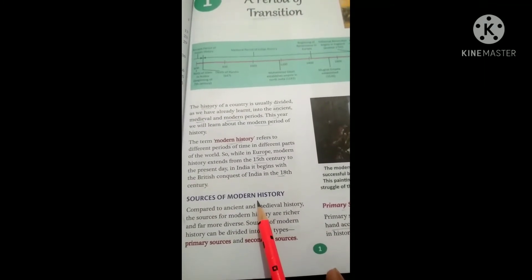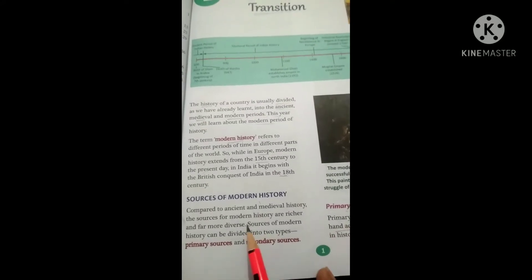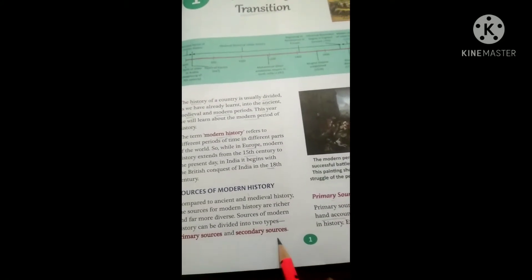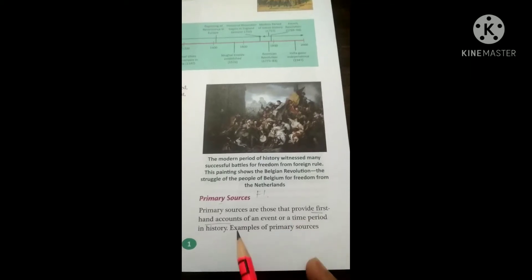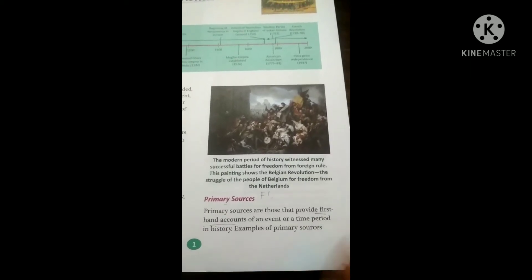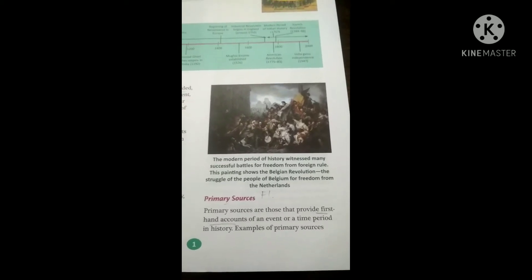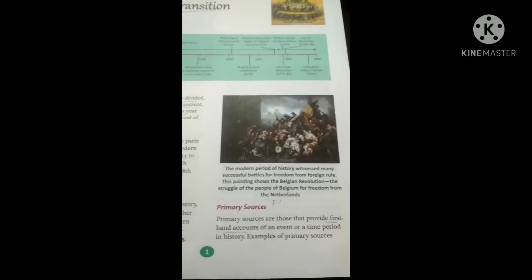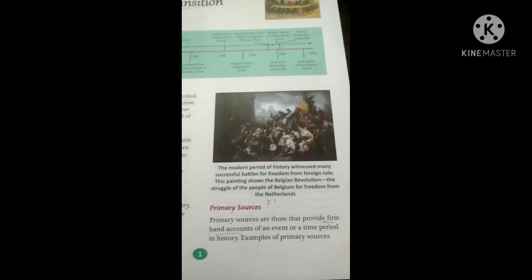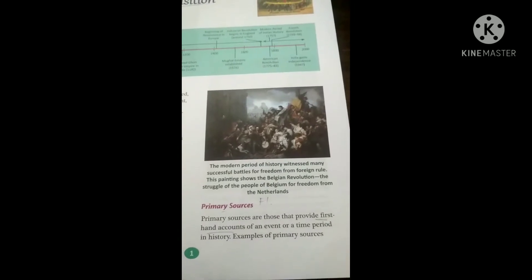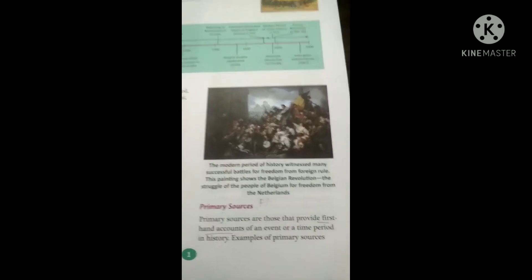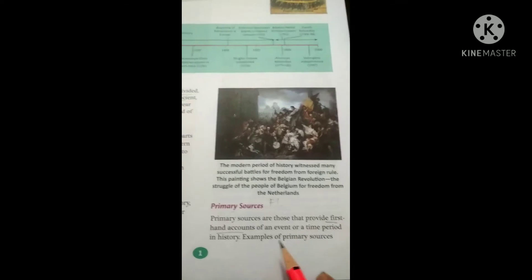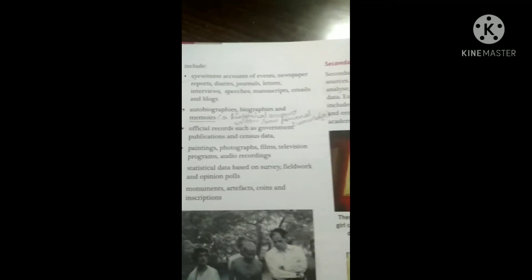Now the topic is sources of modern history — sources which tell us about and give us the knowledge of modern history. There are two types of sources: primary sources and secondary sources. Primary sources are those that provide a first-hand account of an event or a time period of history, meaning knowledge is provided for the first time. For example, when you read a newspaper, you get information and knowledge from it — that is called a primary source.